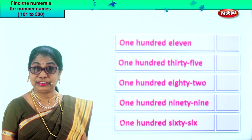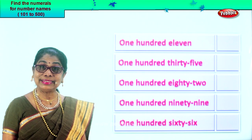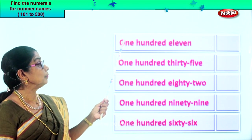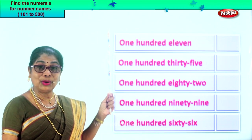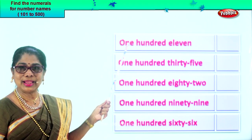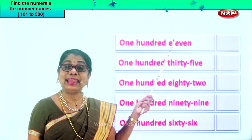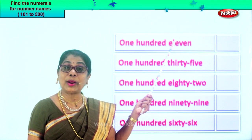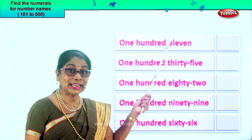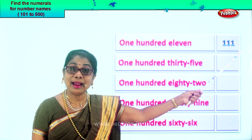Look at what is given to you. Let's read each one and see whether we can write the numeral. It is an interesting exercise. Let's read what is here. One hundred. You already know the spelling of hundred. One hundred. If it is one hundred, how will you write? One, zero, zero. Isn't it? One hundred. But we have here one hundred, eleven. One hundred and eleven. So how will you write one hundred and eleven? You got it?